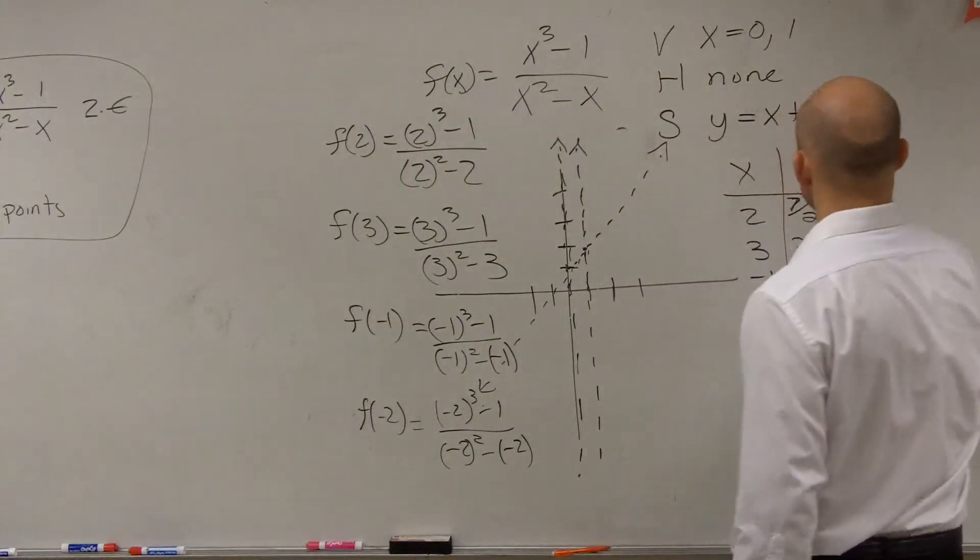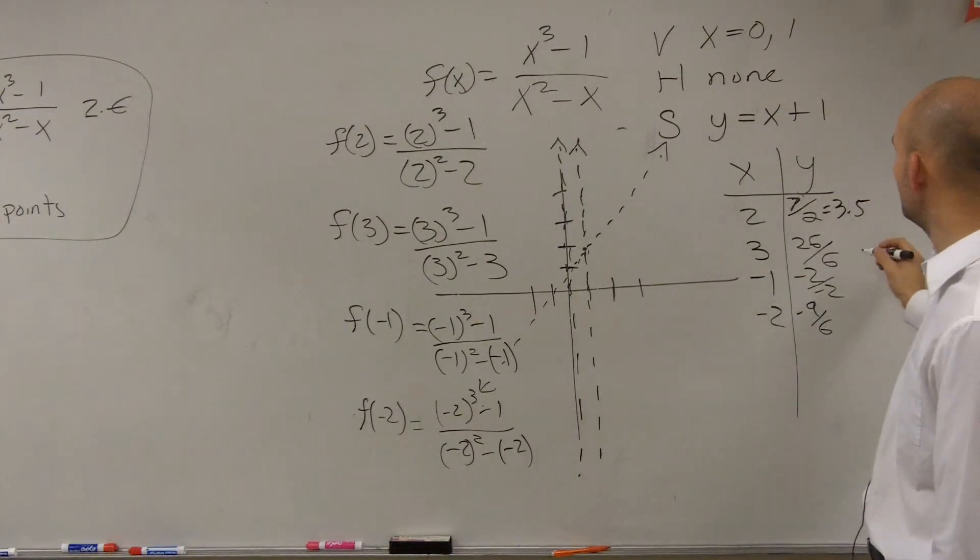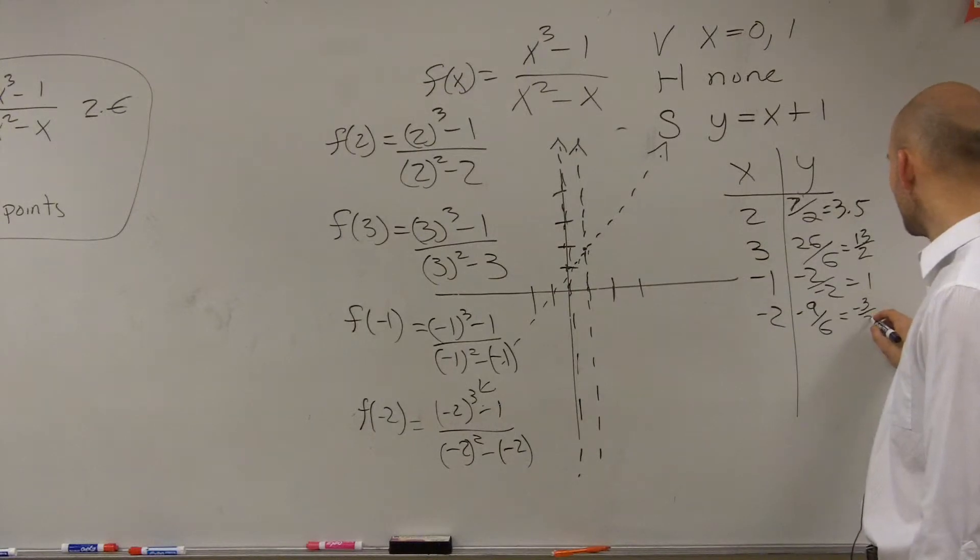So when I go and simplify this, I'll just write the decimal because it would be easier to graph this. This could be 13 over 2. That equals positive 1. And that equals a negative 3 halves.